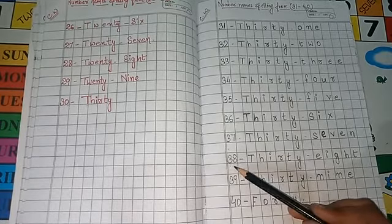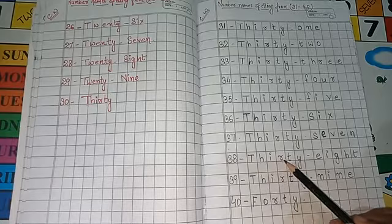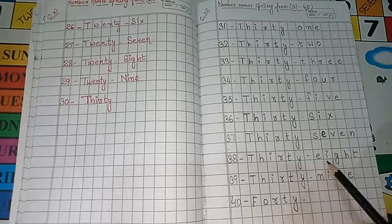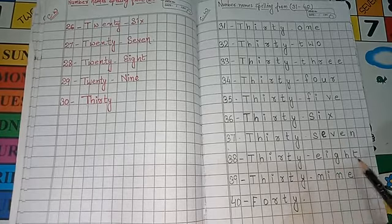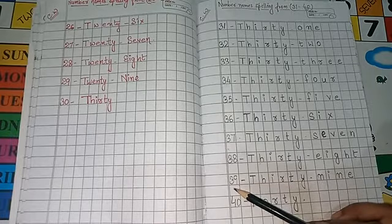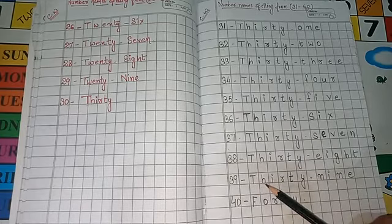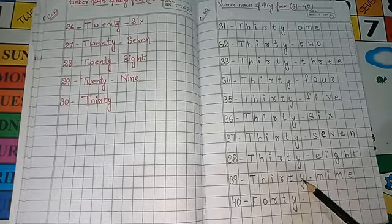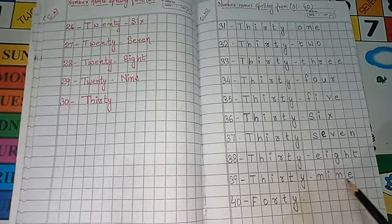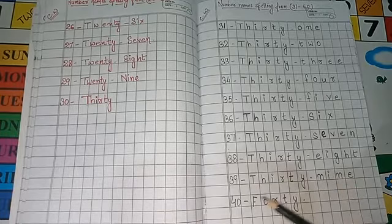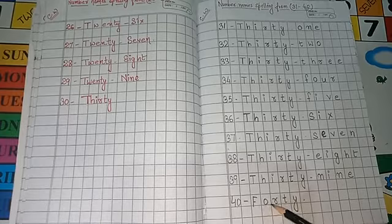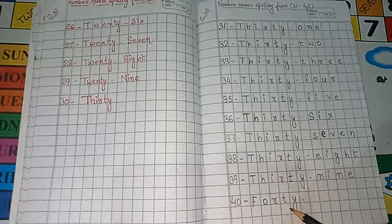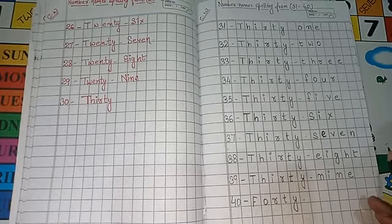Next 38, T-H-I-R-T-Y, 38, E-I-G-H-T, 8. Next number is 39, T-H-I-R-T-Y, 39, N-I-N-E, 9. Next 40, F-O-R-T-Y, 40. Like this way, you have to read it and you have to learn it.